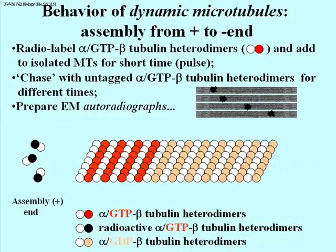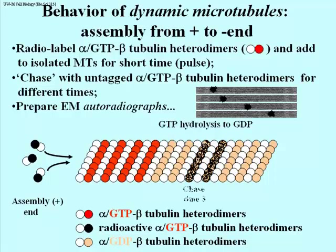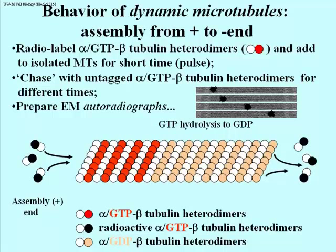This is interpreted using the cartoon: the alpha-beta heterodimers are adding to one end and coming off the other. The radioactive heterodimers add at the plus end, and as the chase progresses with non-radioactive subunits adding, the radioactive segment moves toward the minus end. If you wait long enough after the chase, the microtubules are no longer radioactive at all — because what comes off at the minus end is GDP-bound, and GDP-bound heterodimers cannot participate in adding to the plus end.